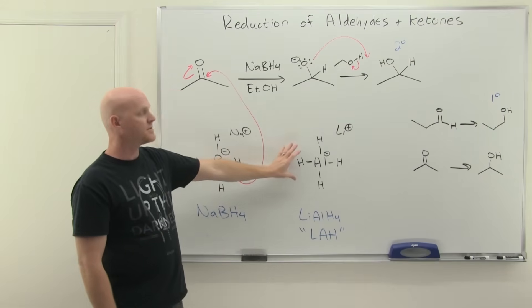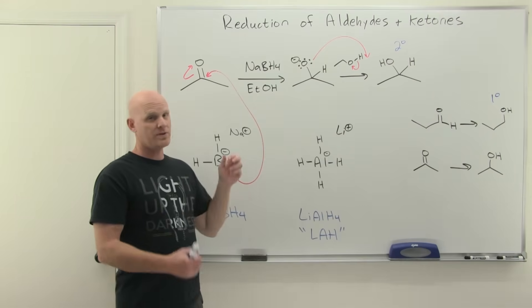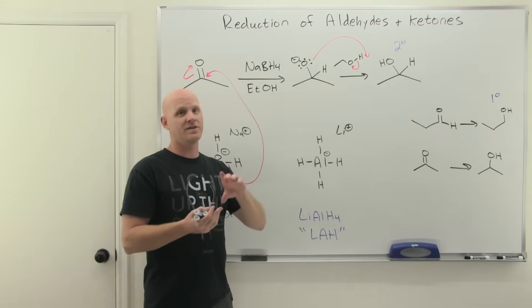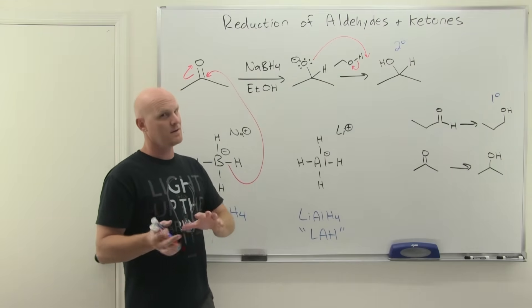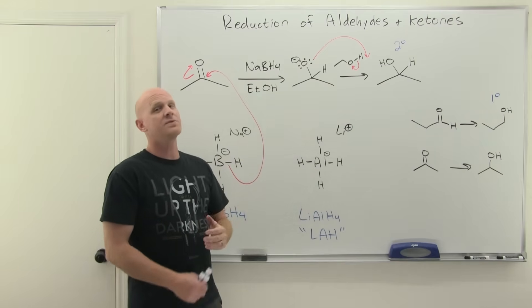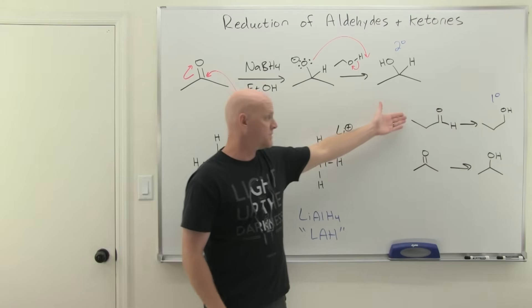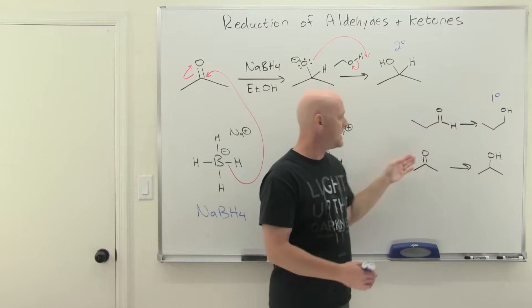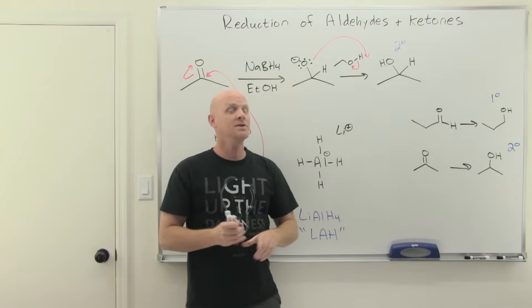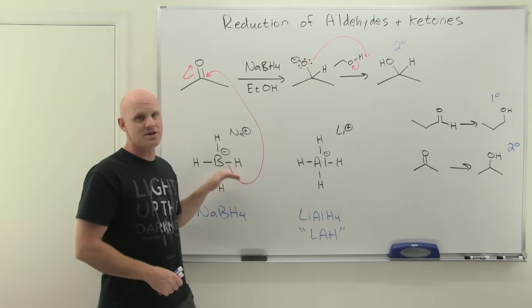Lithium aluminum hydride will reduce not only acid halides and anhydrides but also carboxylic acids themselves, esters, and amides. For now, if all we're dealing with is ketones and aldehydes, view these as interchangeable. Both will reduce an aldehyde to a primary alcohol and a ketone to a secondary alcohol. But in the next chapter, we'll make the distinction between them.